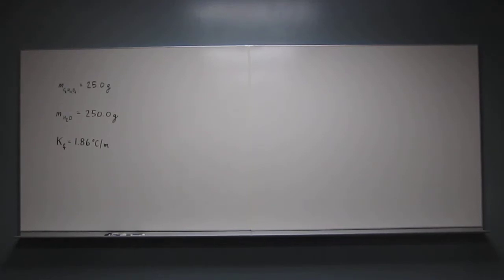Let's try this problem. This is a freezing point depression problem. It says, what is the expected freezing point of a solution that contains 25.0 grams of fructose, C6H12O6, and 250.0 grams of water? And then it gives the KF of water being 1.86 degrees Celsius per mole.